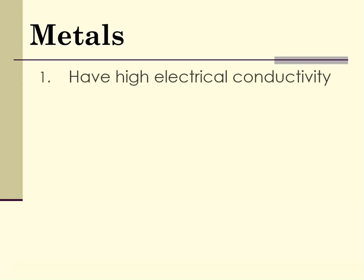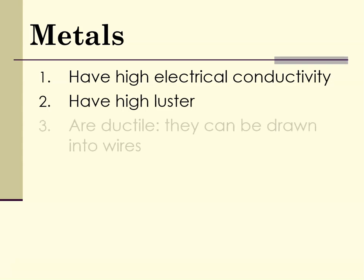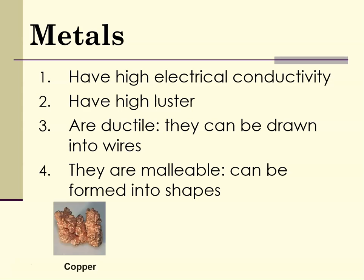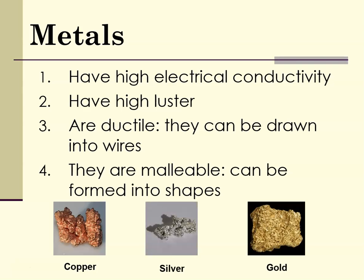Metals have high electrical conductivity and high luster — that means they're shiny. They are ductile, meaning they can be drawn into wires, and malleable, meaning they can be hammered into shapes. Three representative examples of metals are copper, silver, and gold.